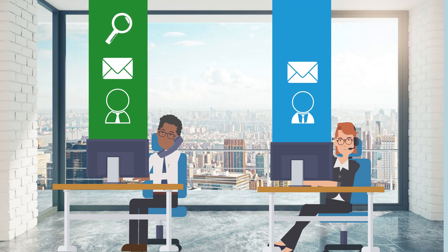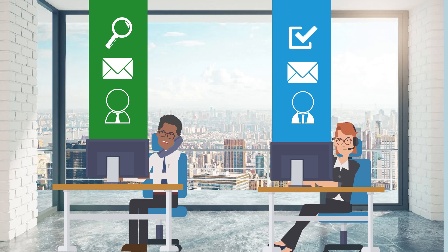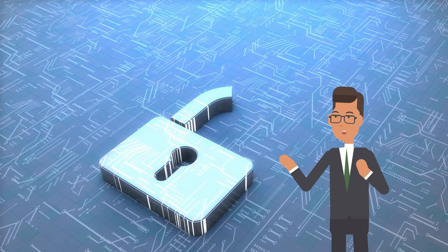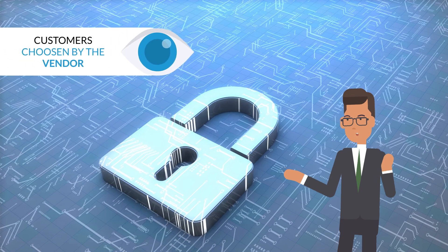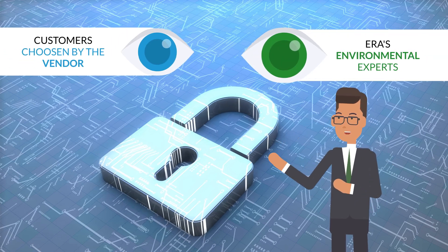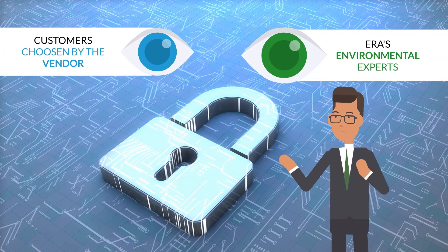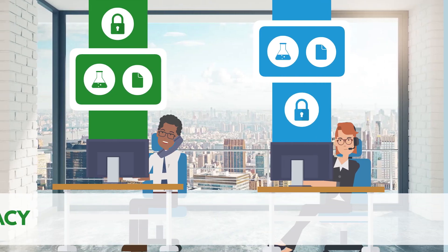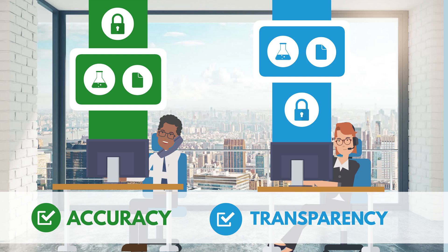The selected customers then receive automated email alerts informing them of the data transfer. They can review and accept, automatically updating all relevant product data within their ERA software. Data is secure and private, seen only by the customers that vendors choose and ERA's environmental experts. Customers cannot alter vendor data, ensuring accuracy and transparency across the supply chain.